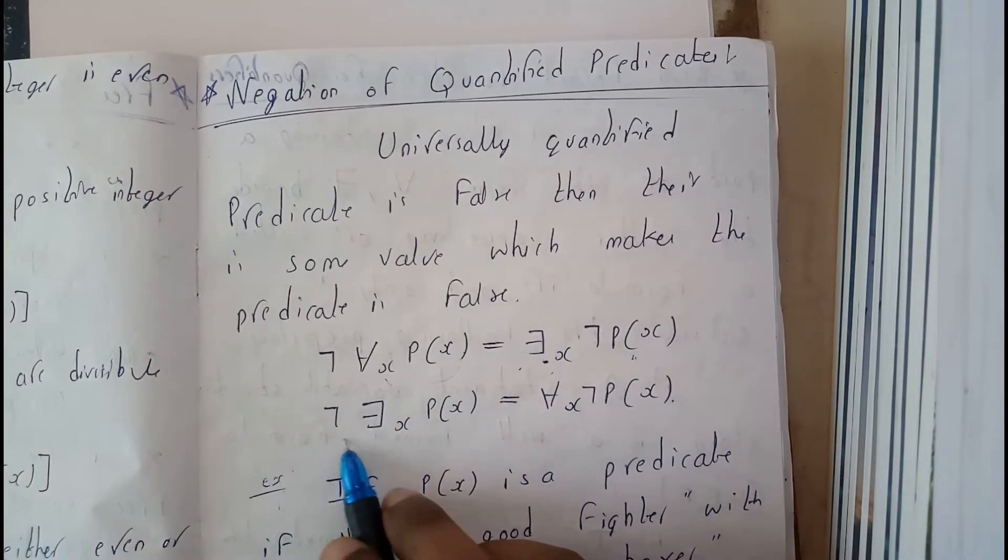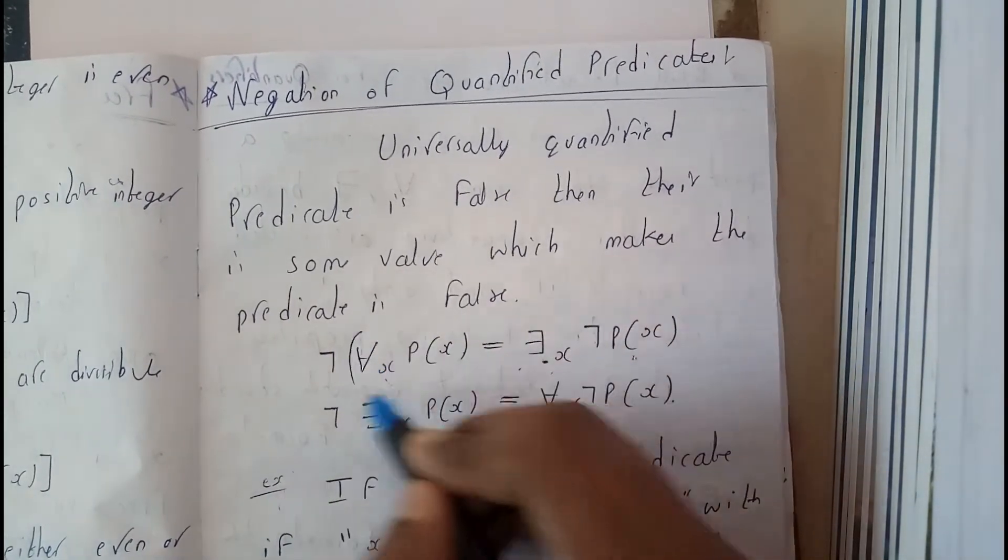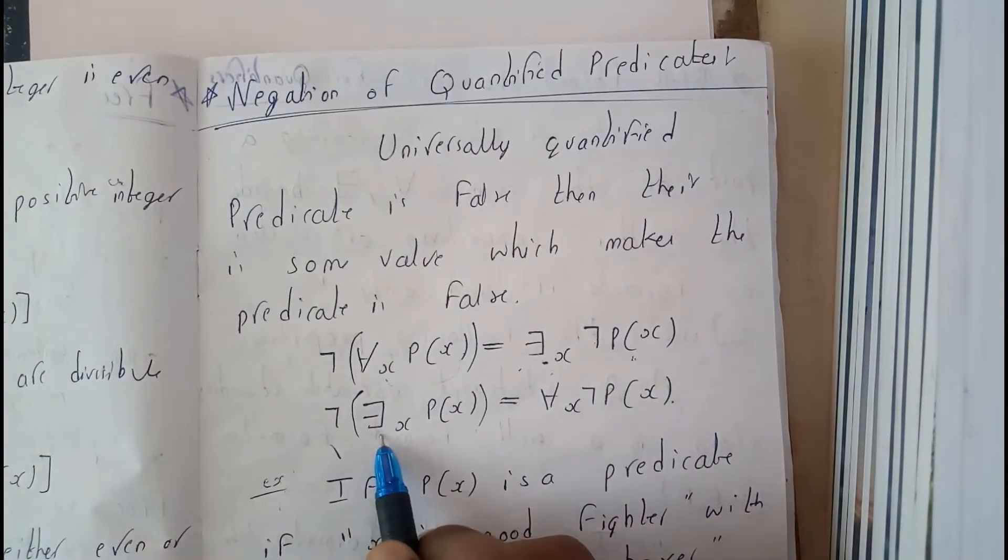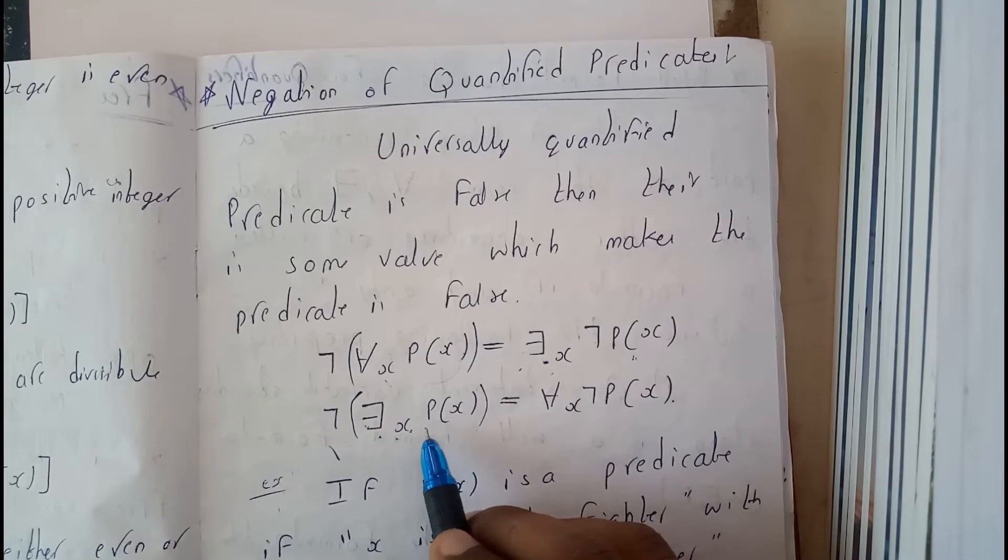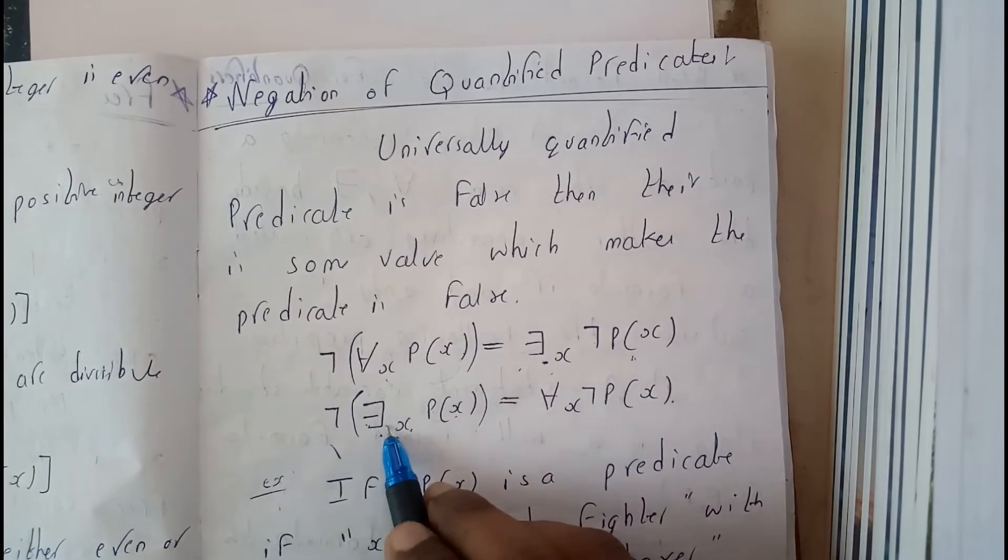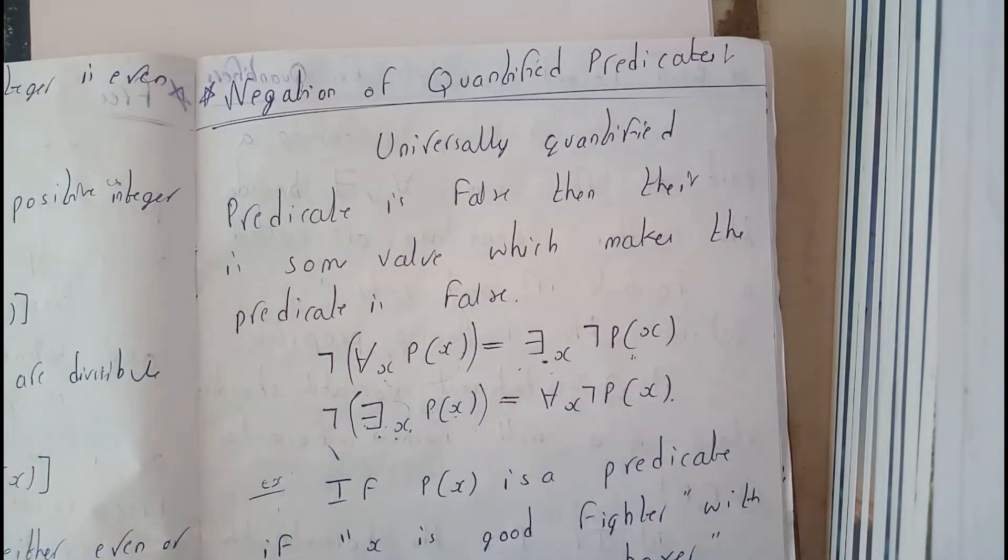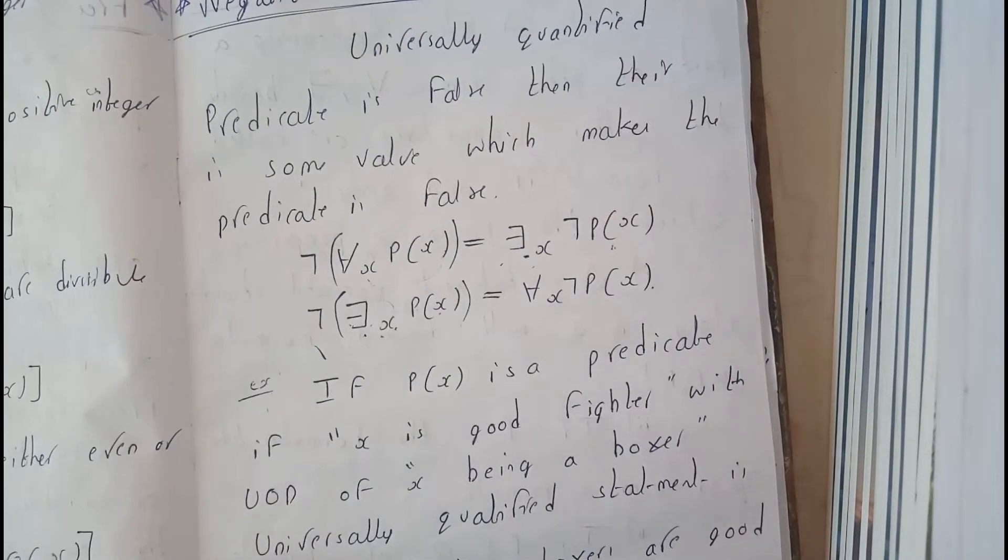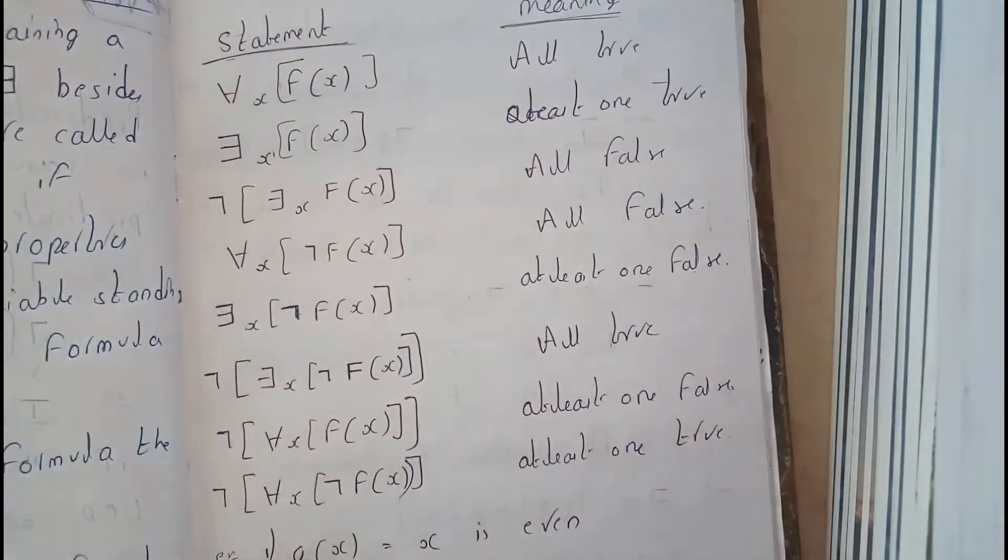Similarly, negation - better let's write like this so it will be a bit clear. Negation of there exists x P(x) is equals to for all x negation of P(x). I hope everyone is clear with these things, so we can take some examples over this.